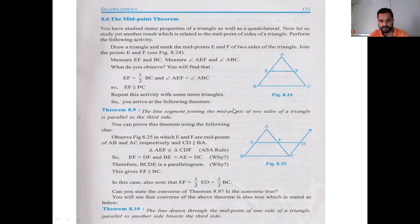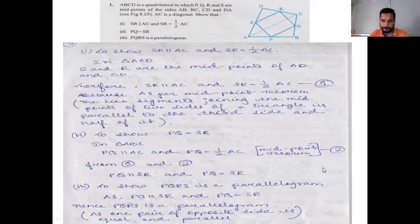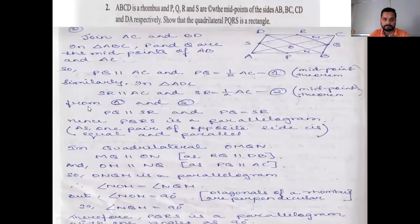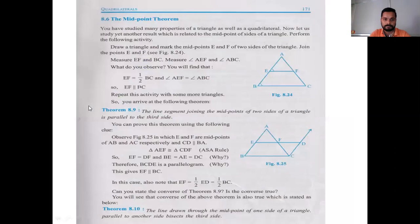Theorem 8.10 is just the reverse of Theorem 8.9. The line drawn through the midpoint of one side of a triangle, parallel to another side, bisects the third side.